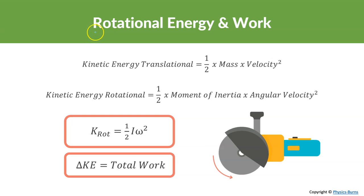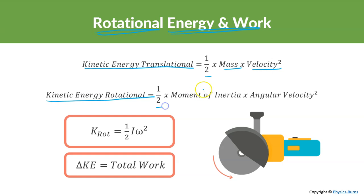Welcome back. Today we are again talking about rotational motion, specifically energy and work. This is a good refresher to everything we've learned with translational motion. Kinetic energy is equal to one-half mass times velocity squared. Similarly, rotational kinetic energy is one-half times moment of inertia times angular velocity squared — it looks very much the same as typical translational formulas.